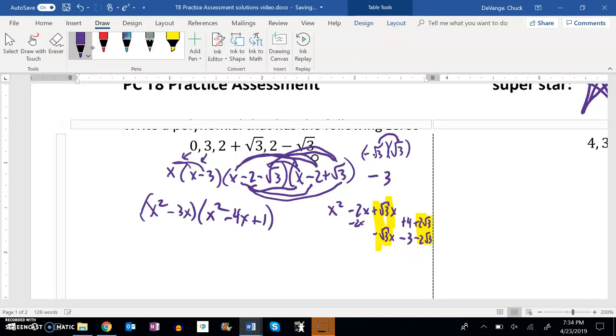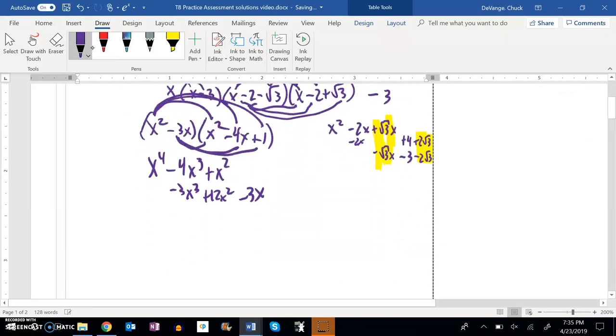So now I'll multiply that out. X squared times x squared is x to the fourth. X squared times negative 4x is negative 4x cubed. X squared times 1 is x squared. Distribute this negative 3 in: negative 3x times x squared is negative 3x cubed, positive 12x squared, negative 3x.